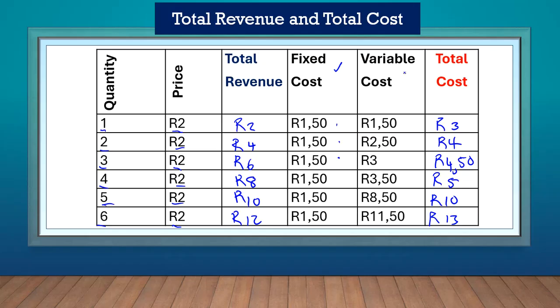But the variable cost, on the other hand, changes with output. For one quantity it's one fifty, for two items it's two fifty, for three items and so forth. So the variable cost changes as output changes.